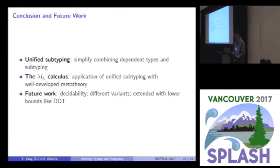So, finally, the conclusion. We propose unified subtyping. We use this idea to simplify the combination of dependent types and subtyping. We propose an application of this idea, the lambda i sub calculus. And its meta theory is well developed. For the future work, we want to explore the decidability proof of this calculus. And we want to explore some different variants of it like supporting recursion and some other features. And we may even extend this just like DOT to support lower bound. That's all.